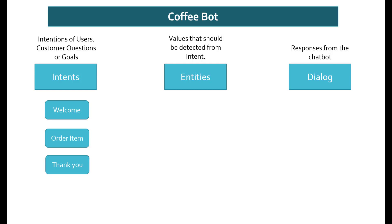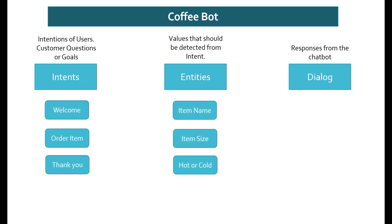In the entities, there are going to be three entities we will define. One is the item name — the type of coffee the user is going to ask for — which can be mocha, cappuccino, or latte. The item size will be small, medium, or large for a typical coffee. Then hot or cold, which will have either hot or cold as the type of coffee.